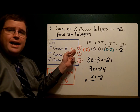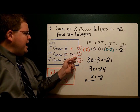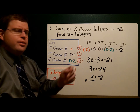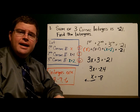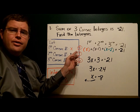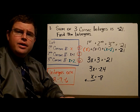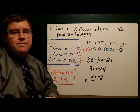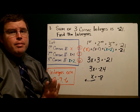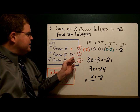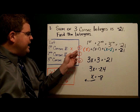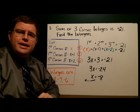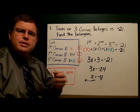So the first integer is negative eight, x plus one gives negative seven, and x plus two gives negative six. It's a good idea to write out your numbers here, because very often folks will mistakenly say negative eight, negative nine, negative ten. But be careful — negative eight plus one is negative seven, and negative eight plus two is negative six. So it's a good idea to write things down and proceed cautiously.